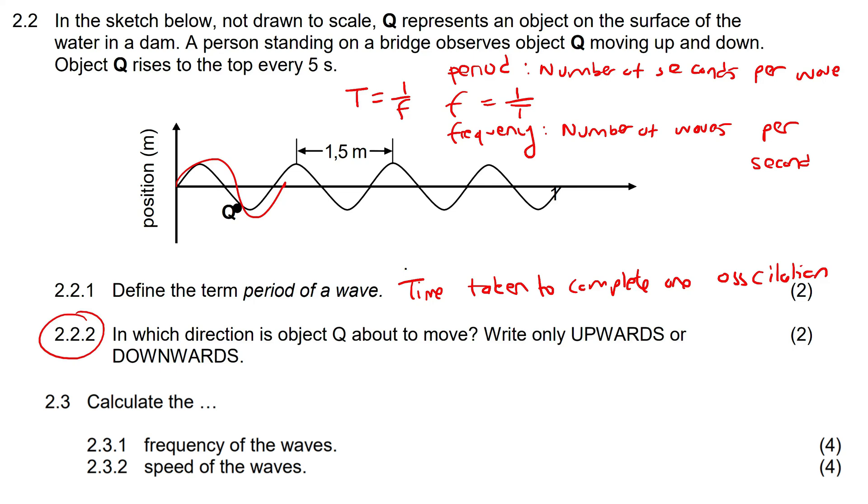Now this question says, in which direction is object Q about to move? These questions are really easy. All that you're going to do is the following. All I want you to do is take this object over here, and we know that when they give us these kind of waves like this, we know that the wave is moving in this direction. Okay, so the wave is going to move in that direction.